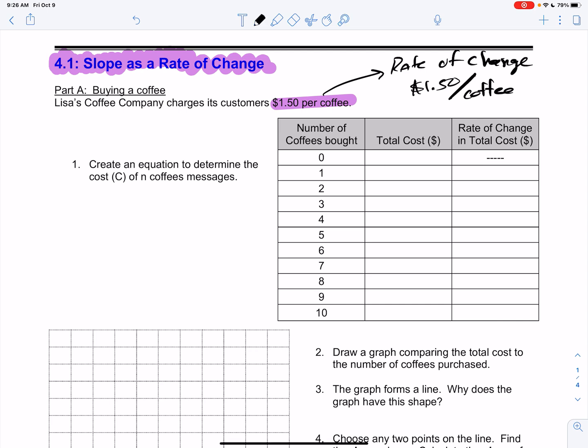Other common rates of change you might have seen before would be like kilometers per hour, right? That would be a rate of change because how many kilometers do you drive per, i.e. for one hour, for one unit? How much coffee do you spend for one cup of coffee, per coffee.